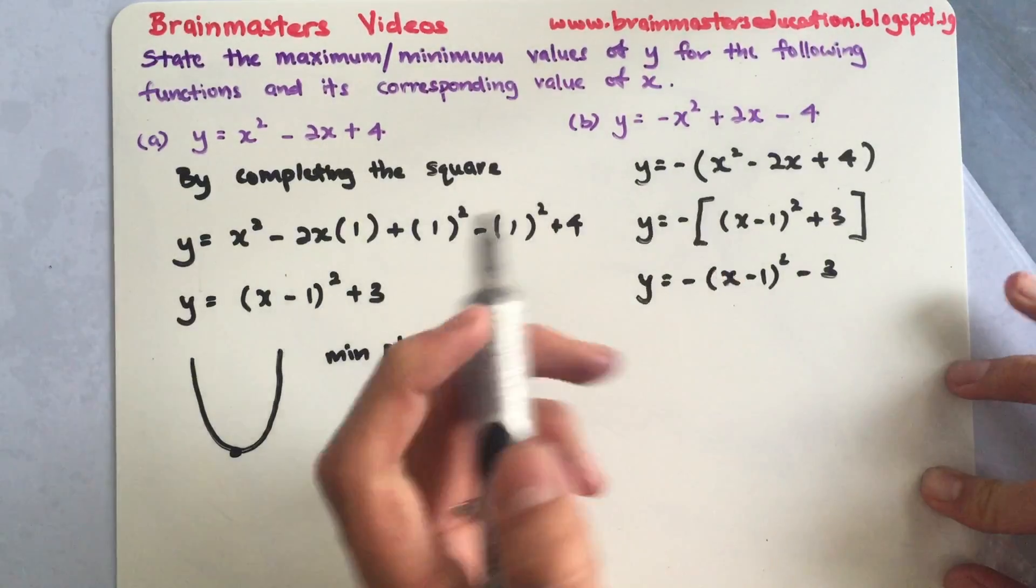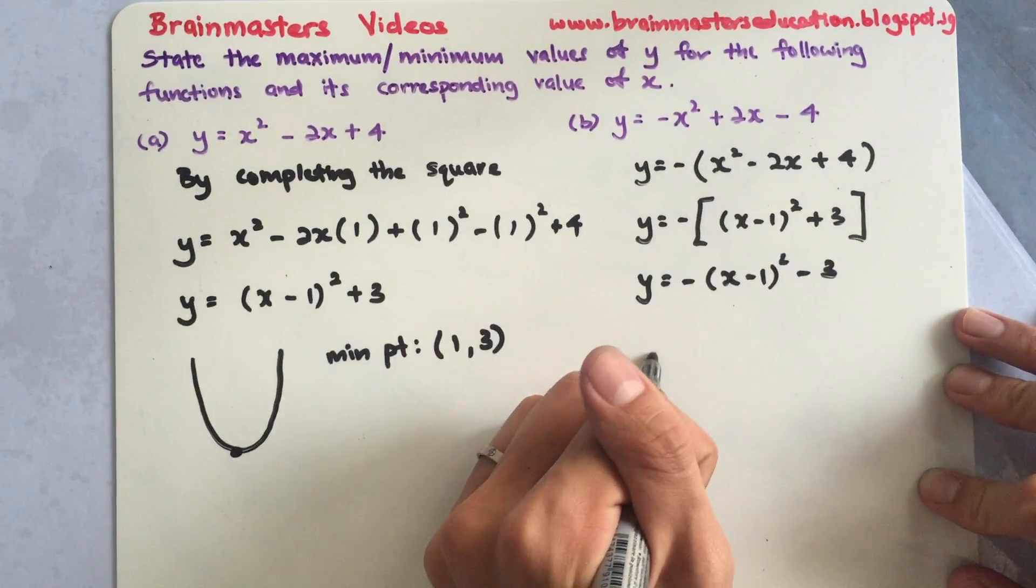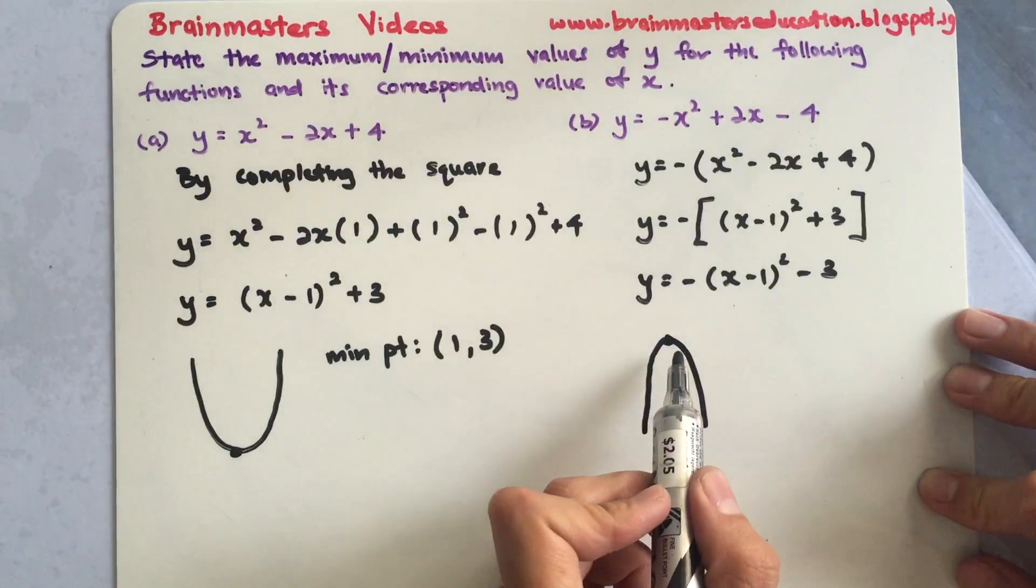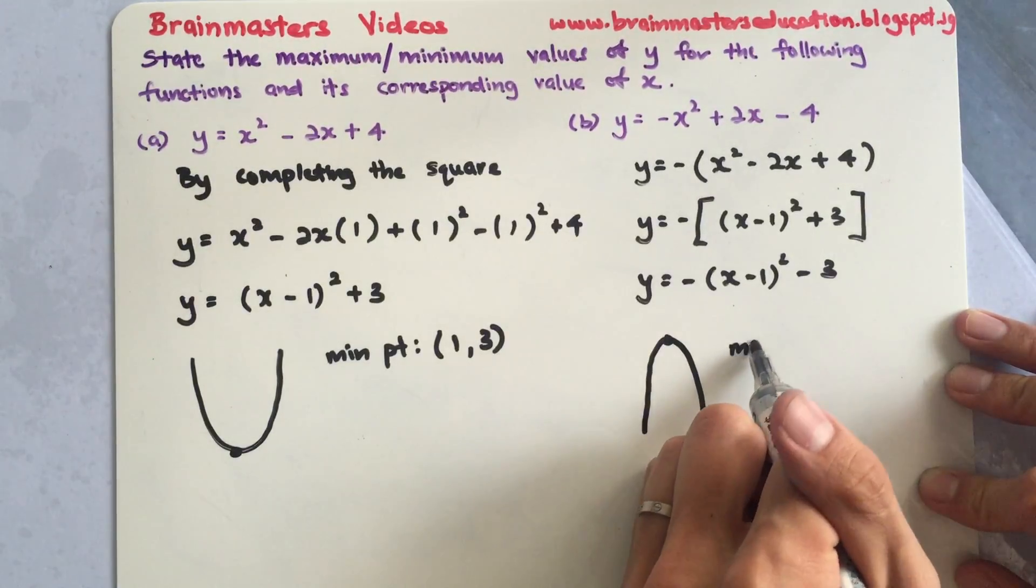Since it's a negative, it means it's a sad face. Over here, I'm finding the turning point and the highest point. This is for the maximum point.